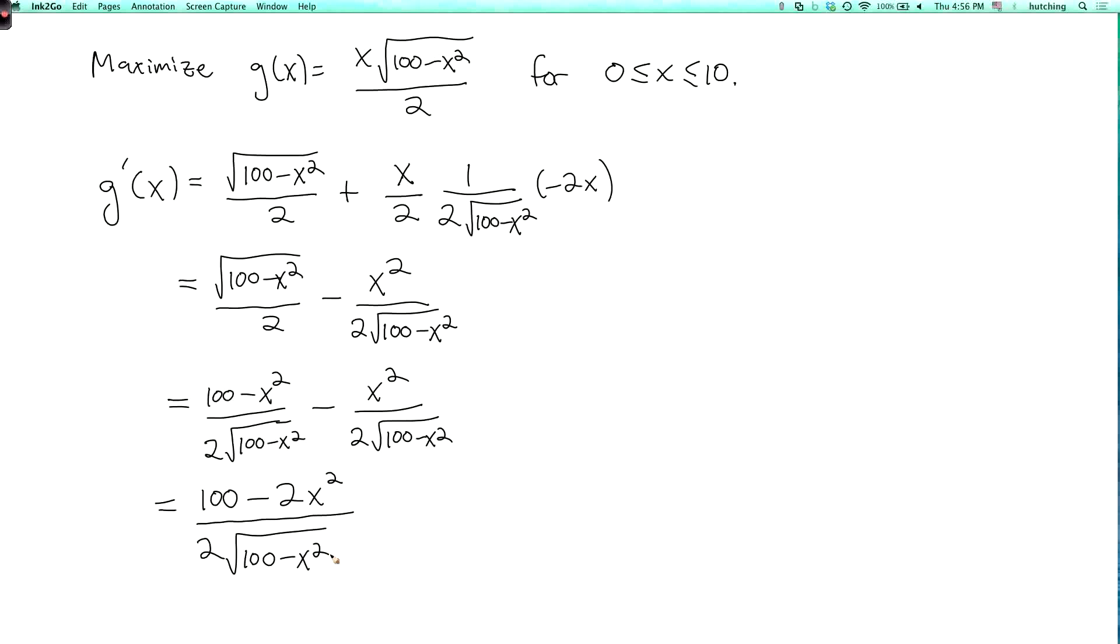Why am I doing this? Because I want to find where g prime equals 0. The candidates for the maximum are points where g prime equals 0 and points on the boundary of the interval. Now on the boundary of the interval I have g of 0 equals g of 10 equals 0, so that doesn't look like it's going to be the maximum.